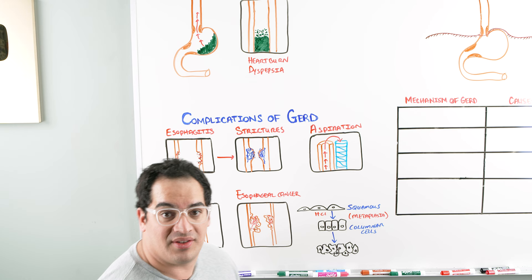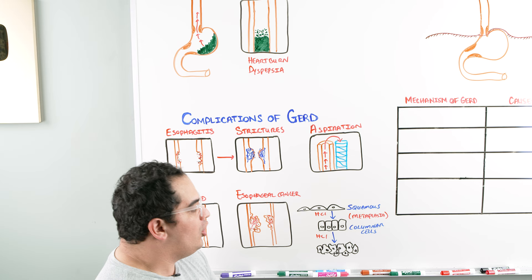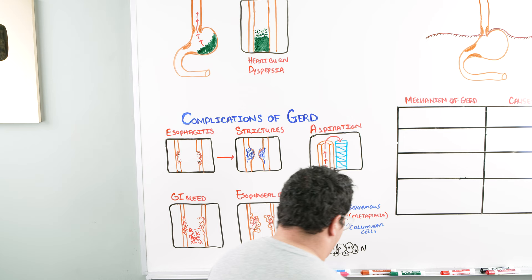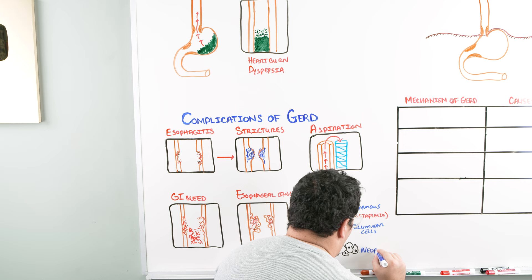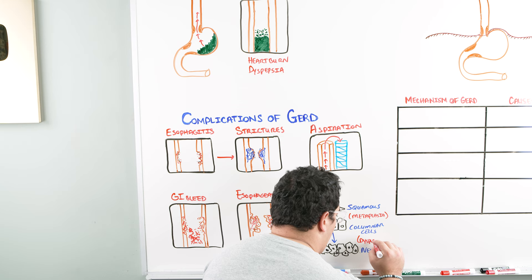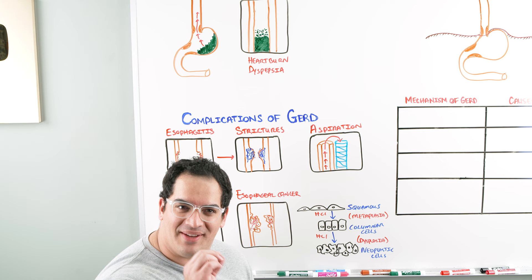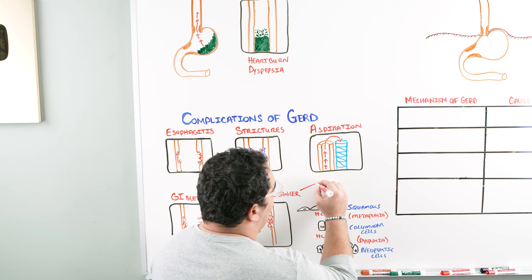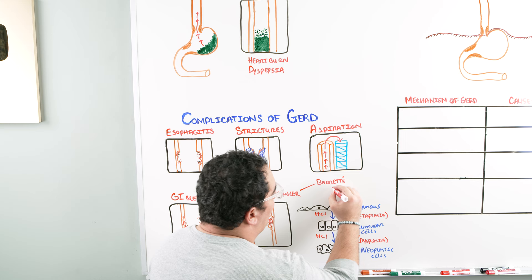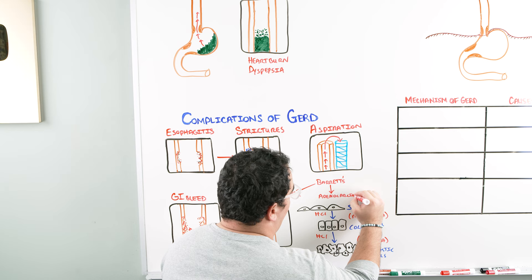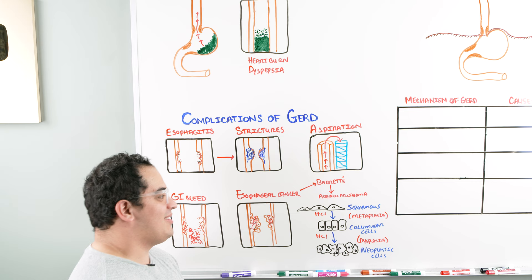Going from squamous cells to columnar cells is metaplasia. If you continue to cause more erosive damage and inflammation, you can turn these columnar cells into neoplastic cells — this is called dysplasia. The key progression to understand is: metaplasia leads to what's called Barrett's esophagus, and then over time Barrett's progresses to adenocarcinoma.